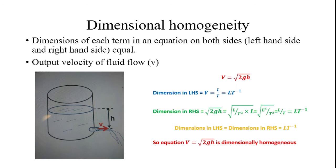For example, consider the output velocity of fluid flow from a container. The container has water, which has an output velocity V and a pressure head H.